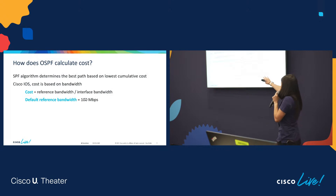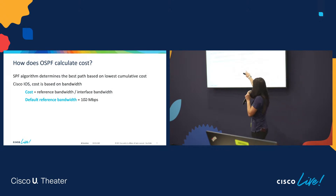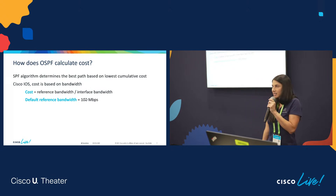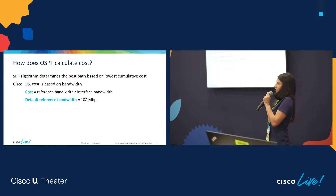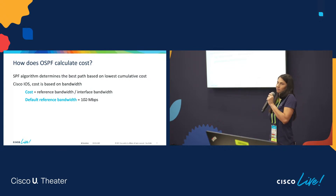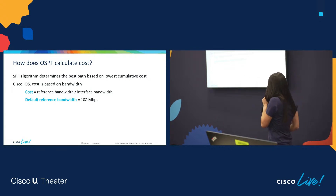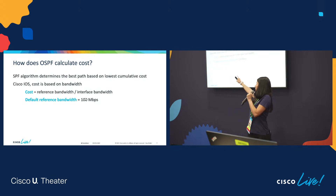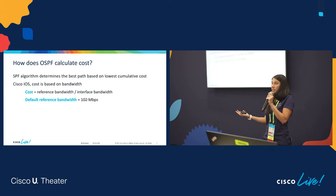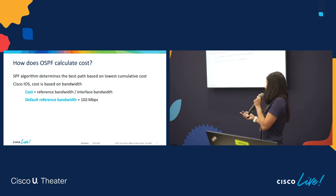The default reference bandwidth is 100 megabits out of the box. So if we're looking at a 10 gig link, a 1 gig link, or a 100 meg link, it's all a cost of one. That doesn't sound like a good idea. So we want to either change the default reference bandwidth, which is a global parameter, or we can change the cost on a link-by-link basis. You can mix and match — it's not one or the other, you can do both.